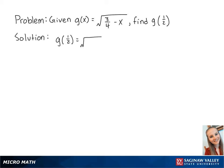So we get the square root of 3 fourths minus 1 half. To subtract these, we need to find a common denominator of 4. So this becomes the square root of 3 fourths minus 2 fourths.